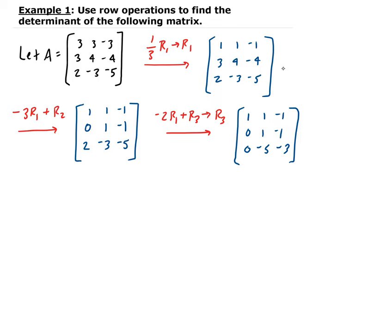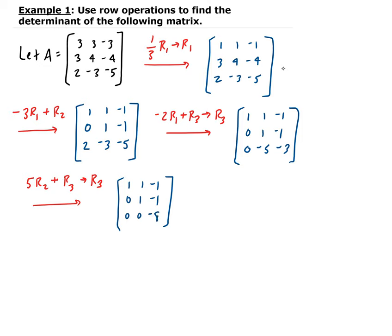Now I want to make this negative 5 into a 0. So we're going to take 5 times row two, add it to row three, and store that result in row three. That gives us 1, 1, negative 1 — then 0, 1, negative 1 — then 0, 0, and 5 times negative 1 is minus 5, minus 3, giving us negative 8.